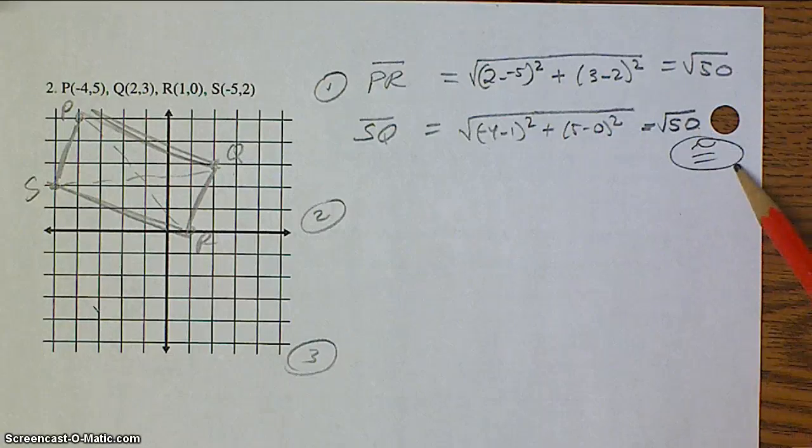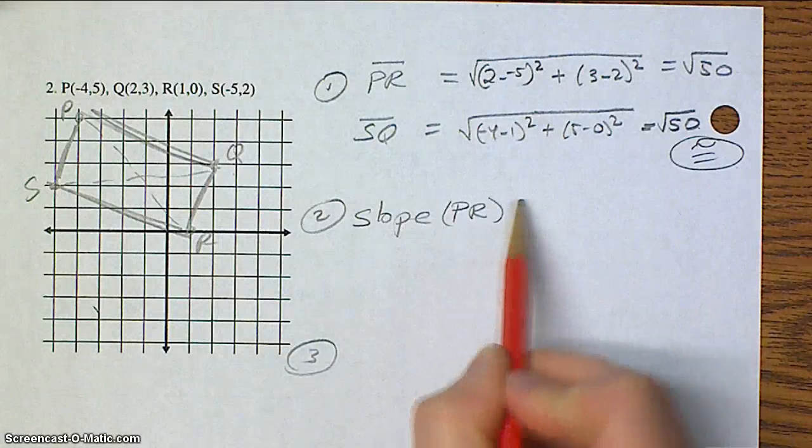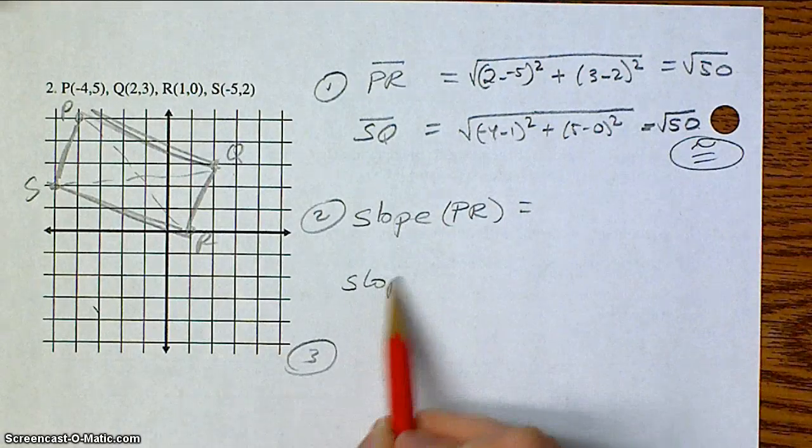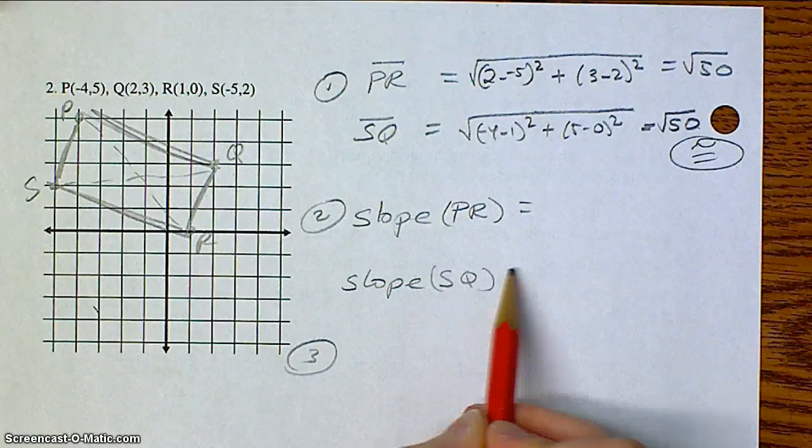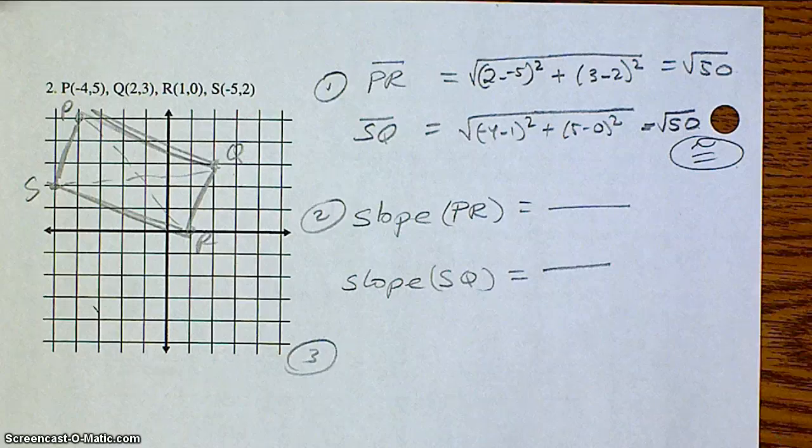Therefore, the diagonals are congruent. Now, we're going to calculate the slope of both those diagonals. And again, when you're ready, resume the video so that you can check and see if you got it correct.